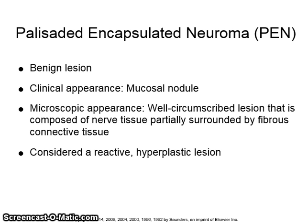Palisaded Encapsulated Neuroma, or PEN, is a benign lesion that appears as a mucosal nodule. The microscopic appearance is a well-circumscribed lesion composed of nerve tissue partially surrounded by fibrous connective tissue. It is considered a reactive hyperplastic lesion.